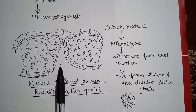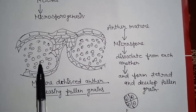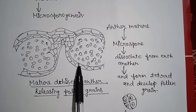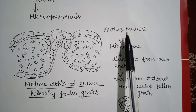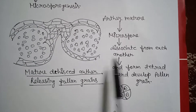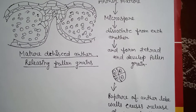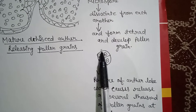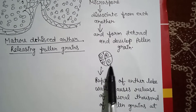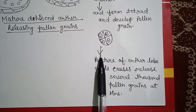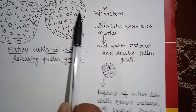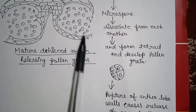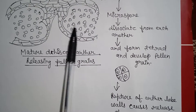When the anther is mature and the anther lobe is ruptured, most of the pollen are released. After rupture, there are several thousand pollen grains. These form a tetrad. The tetrad is formed by the pollen grains. Rapture of the anther lobe releases pollen at a time.